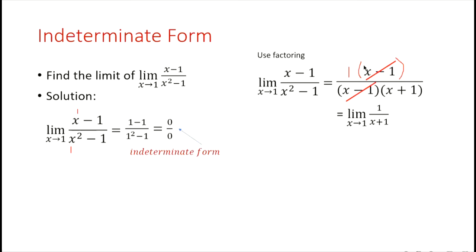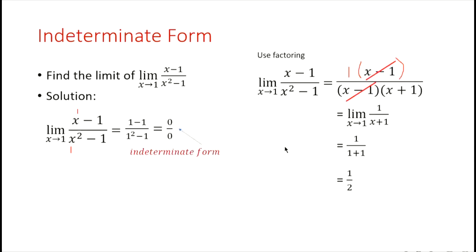Now that we have eliminated the indeterminate form through cancellation, we can apply the definition of a limit. Finding the limit of 1 over x plus 1 as x is approaching 1, we substitute: 1 over 1 plus 1 equals 1 over 2. Therefore, the limit of x minus 1 over x squared minus 1 as x approaches 1 is 1 over 2.